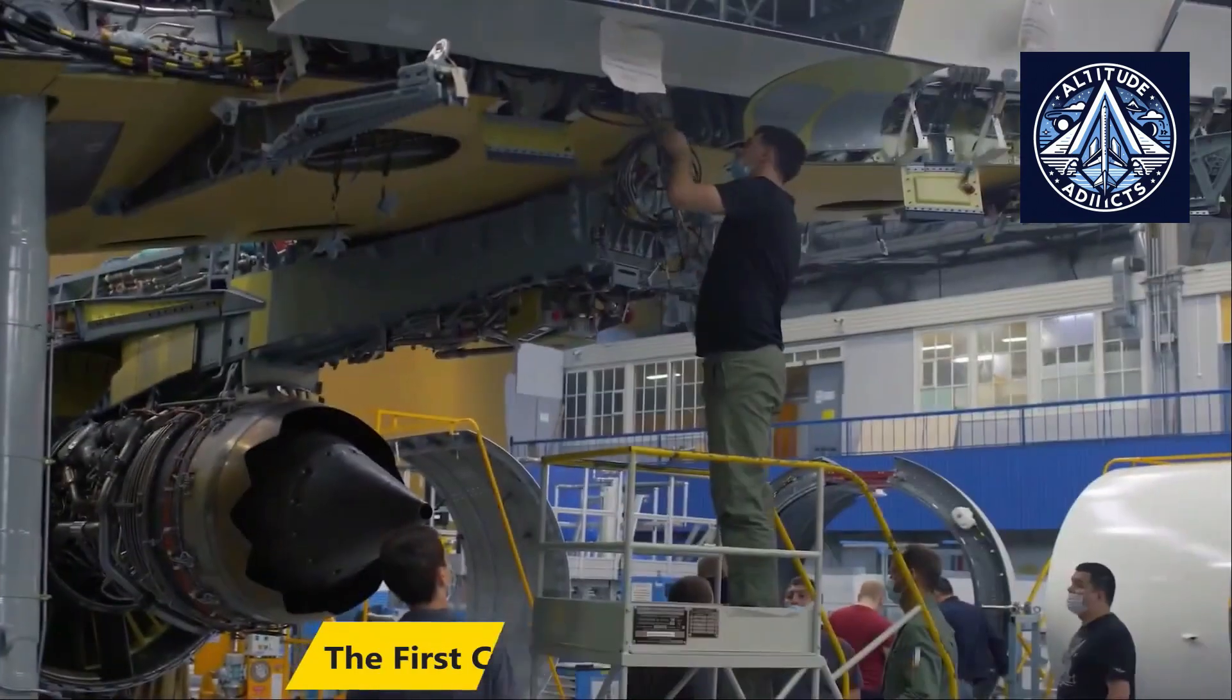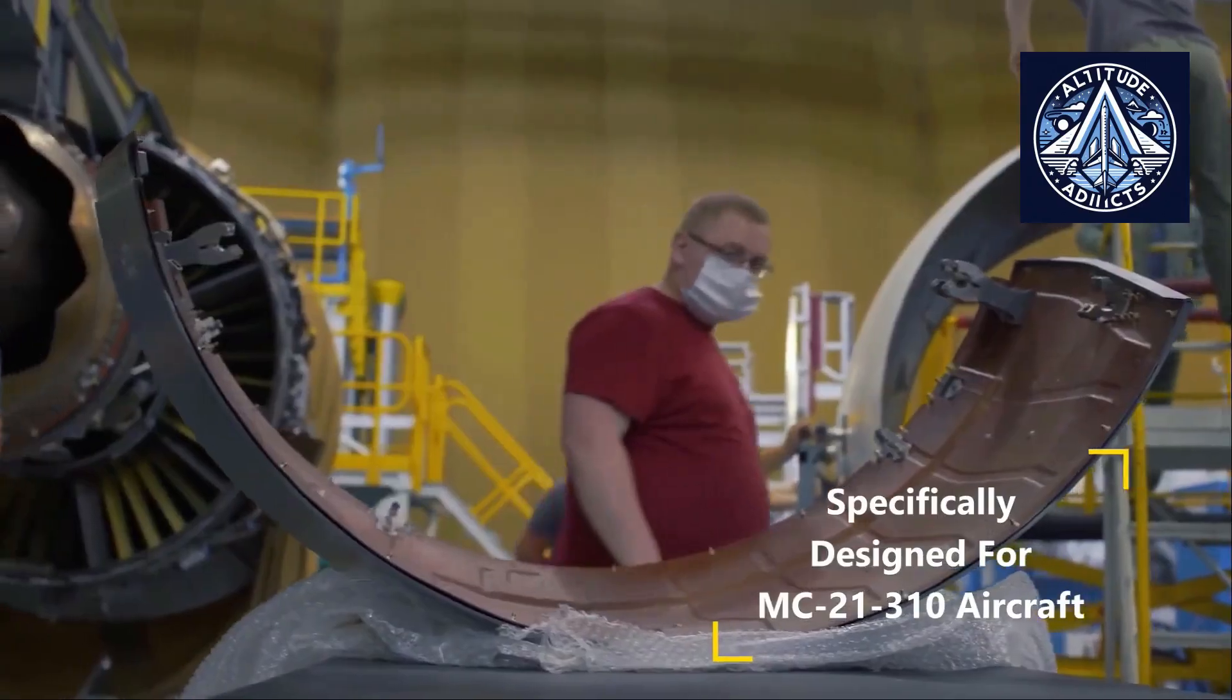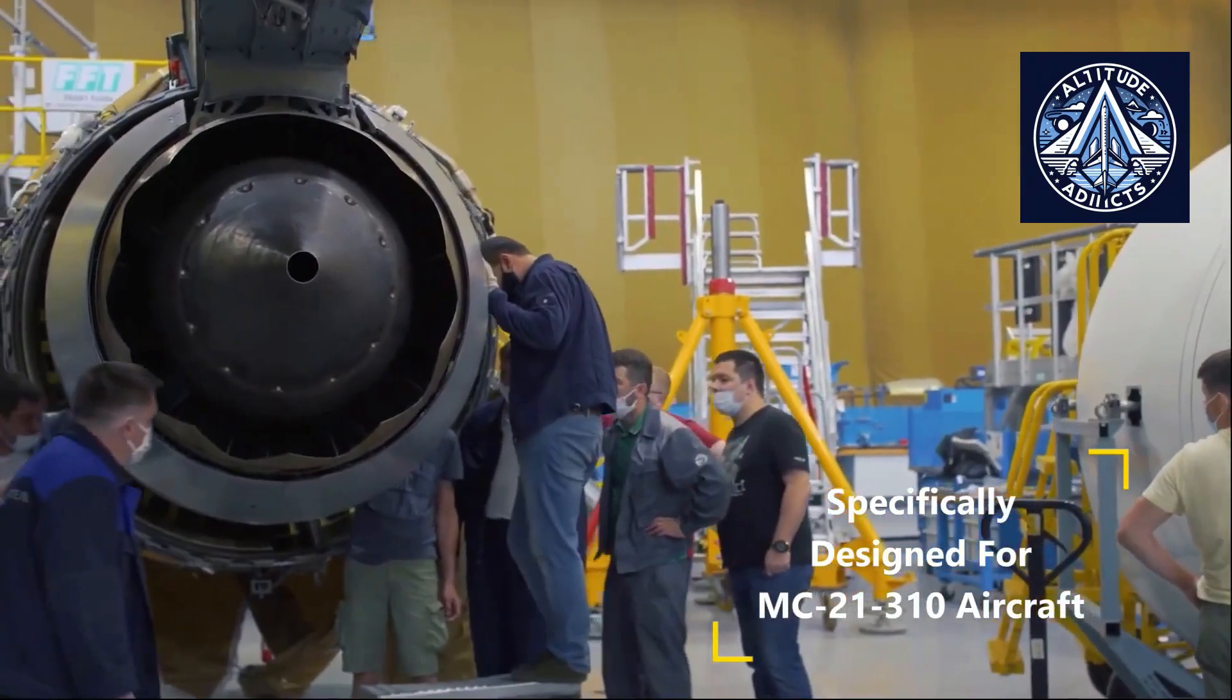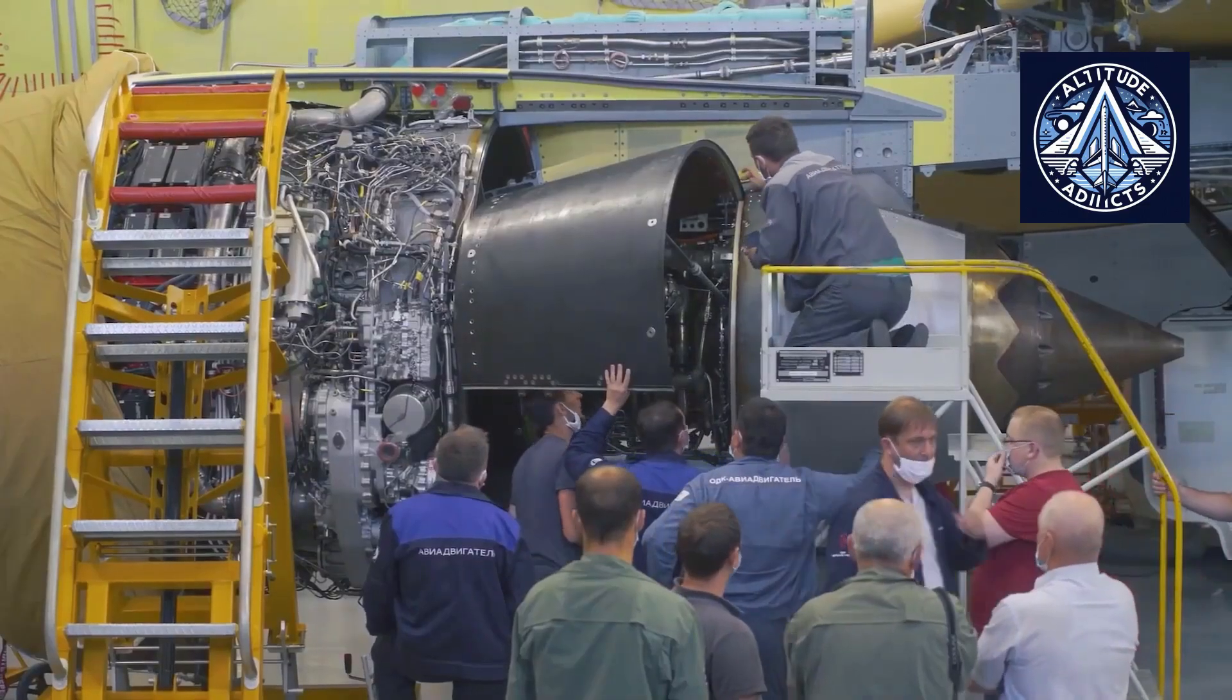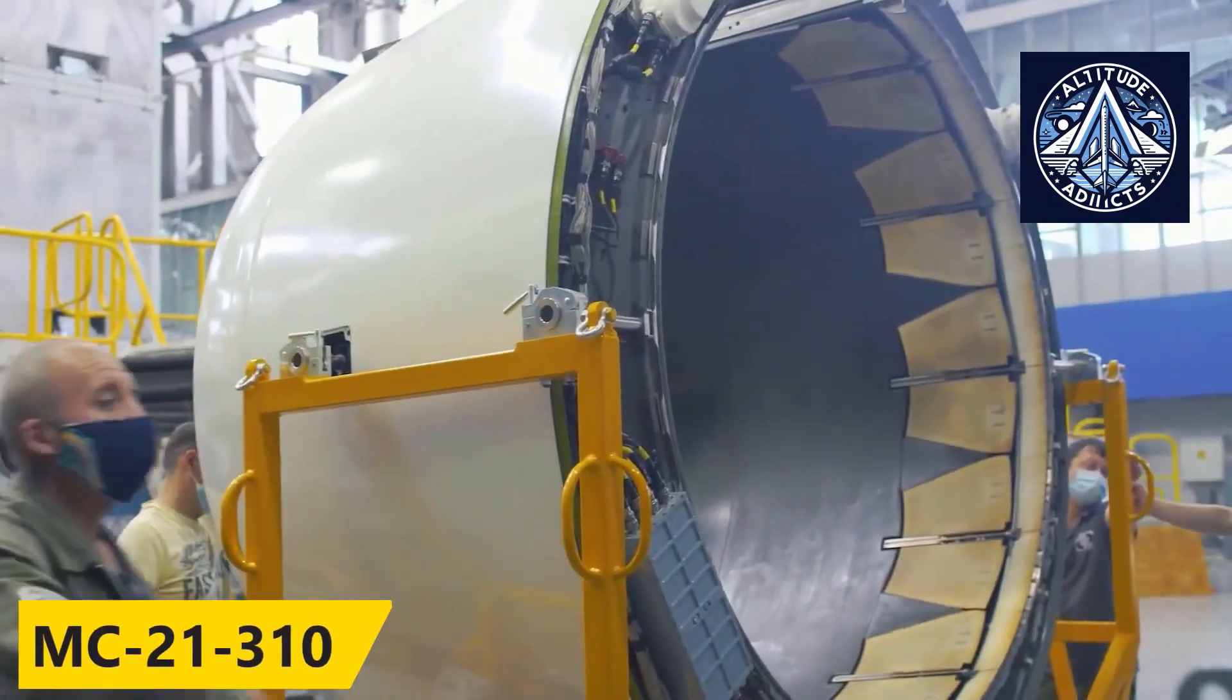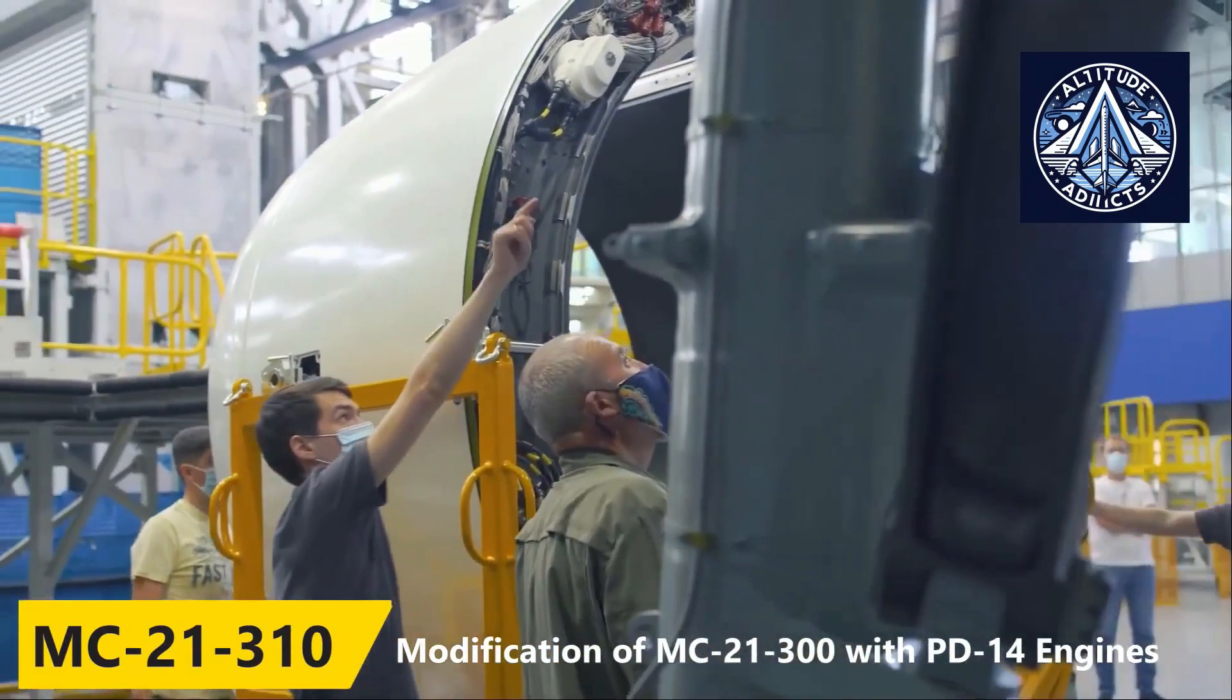For nearly eight decades, the evolution of Russian commercial aircraft engines has mirrored the nation's broader technological progression, transitioning from early jet experimentation in the post-war period to sophisticated fifth-generation propulsion systems such as the PD-14 and PD-8.